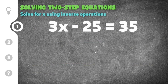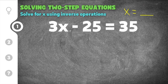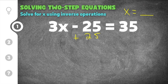Let's jump into our first practice problem for solving two-step equations. This problem gives us 3x minus 25 equals 35. Remember, we're trying to get x on one side of the equal sign and a number on the other. Our variable is on the left, so we need to get all the numbers on the right. To get rid of minus 25, we do the opposite and add 25, so the 25s cancel. Whatever you do to one side you also do to the other, so we add 25 to the right side as well — 35 plus 25 equals 60.